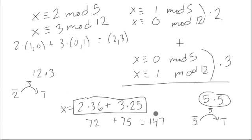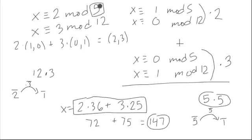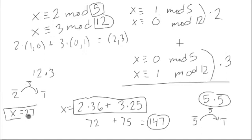Now we can reduce this to a simpler representative, perhaps. Because really, all of our solutions are going to be a skip pattern away from this — if we just add a multiple of 5 times 12, which is 60. This whole process worked because 5 and 12 did not share any common factors; that's important for this method to be successful. So if we subtract 120 from 147, we get 27. So x equals 27 works as a nice solution to this system of congruences.